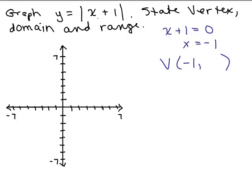We plug that into the original equation and that will give us our Y coordinate. So when we plug in −1 for X, we get y = |0|, which is 0. So the vertex is (−1, 0), which is right here. And we know it's going to have a V shape, right? That's where the vertex point is.